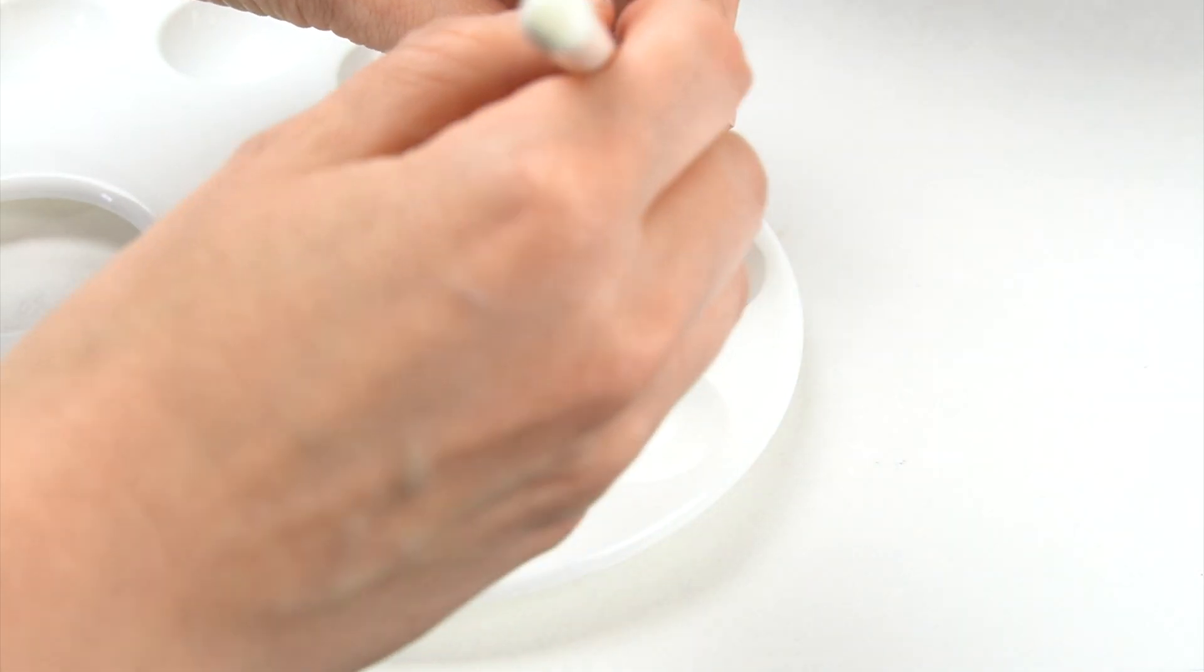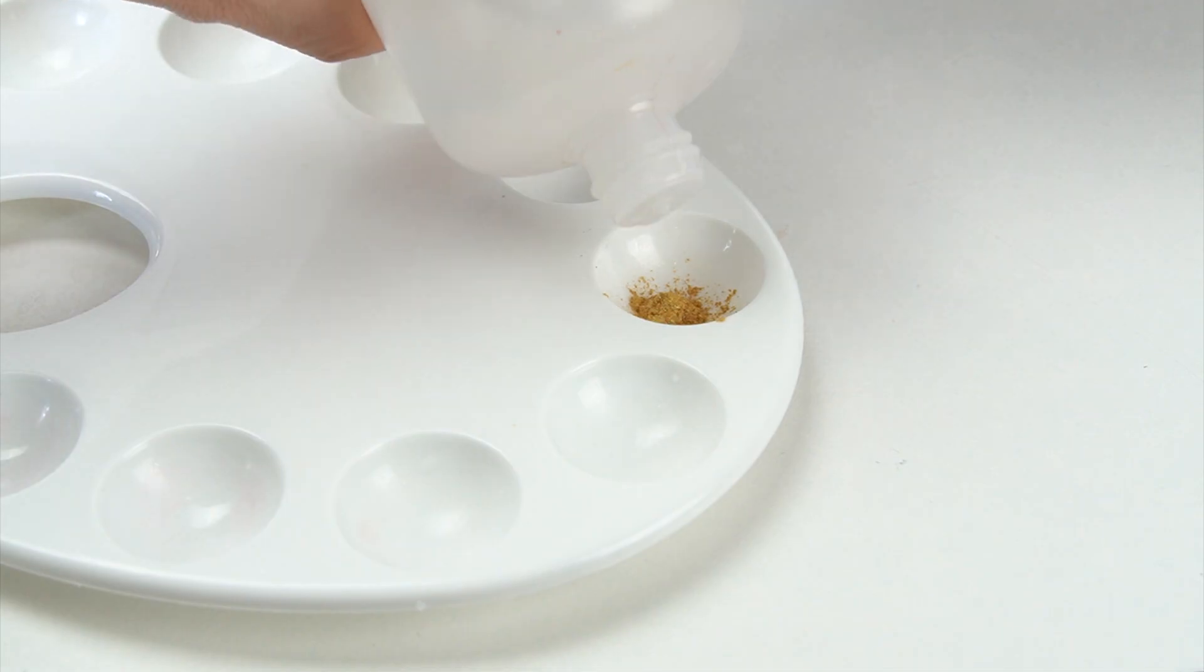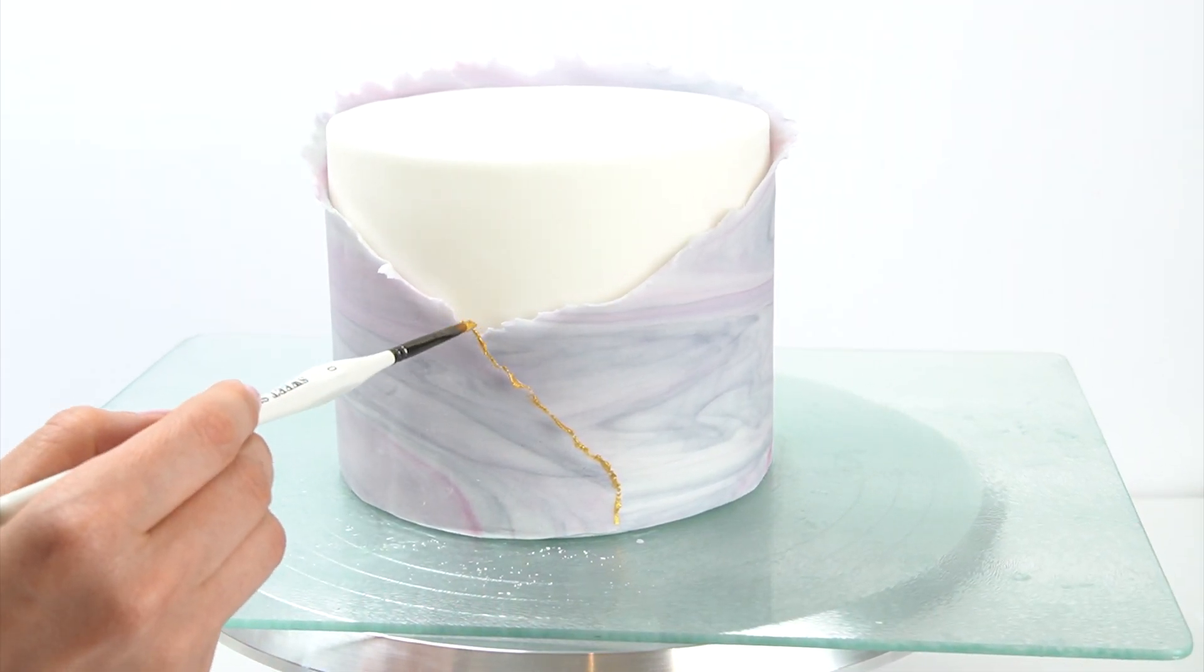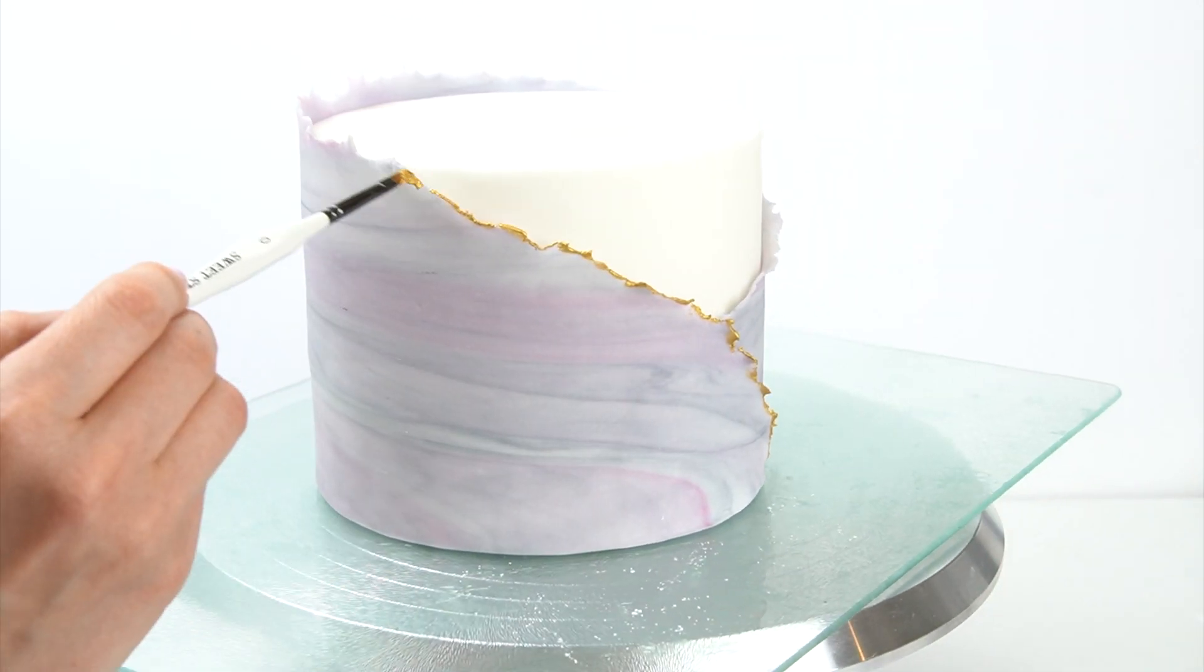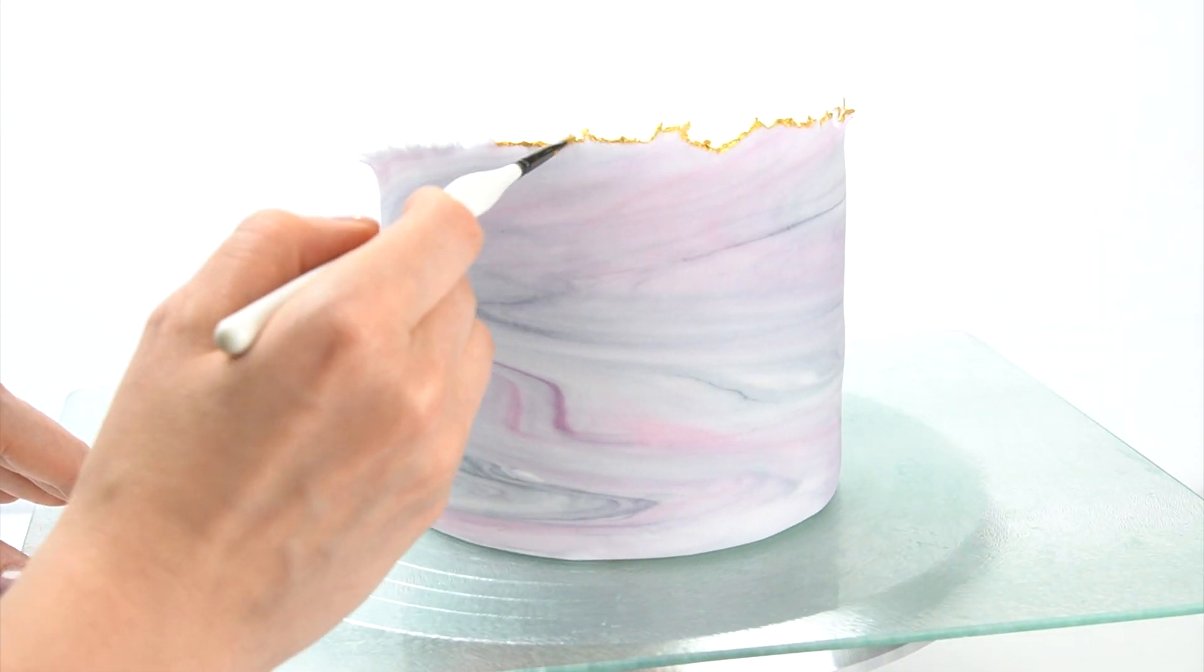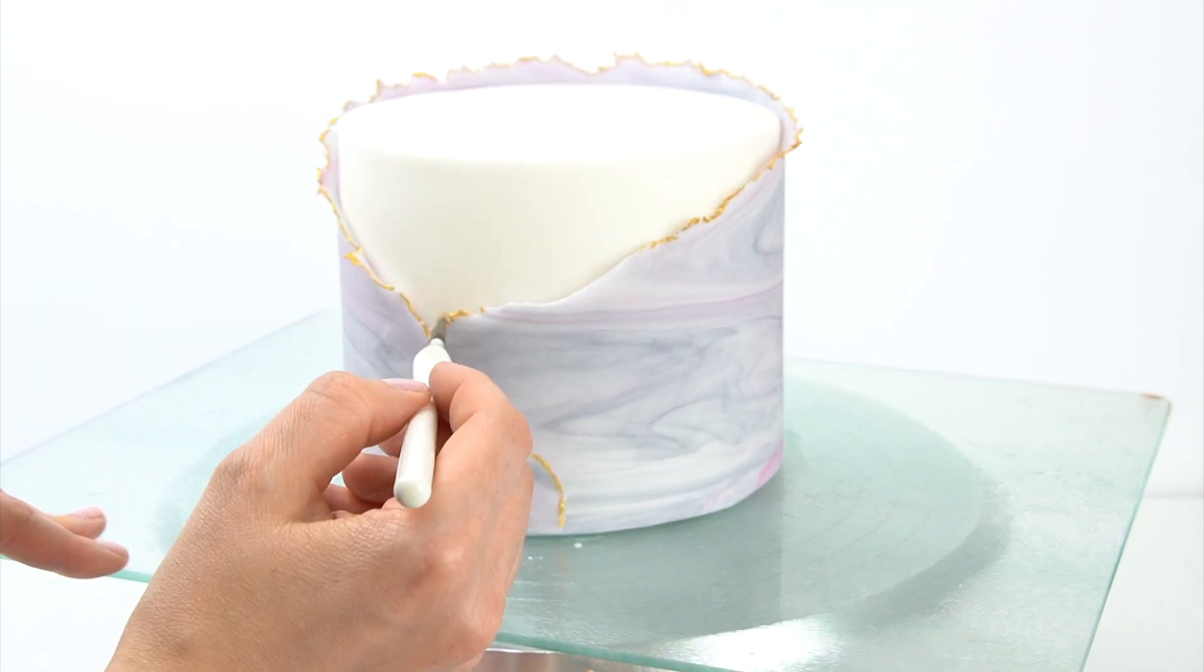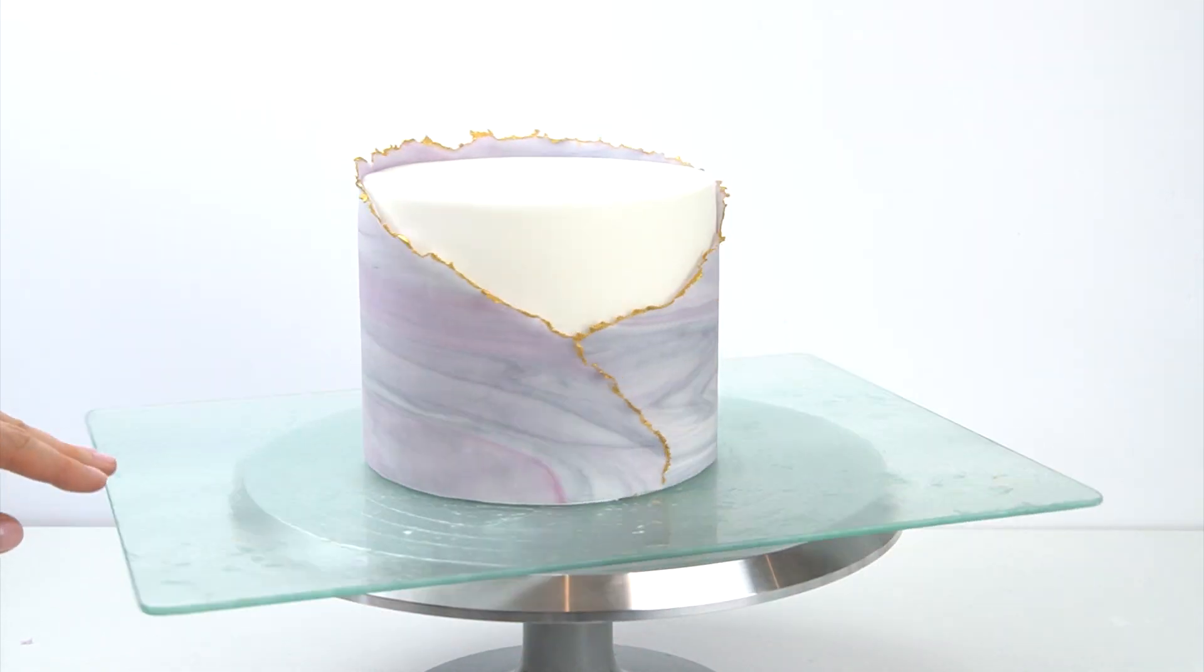To finish this off I'm taking some gold luster dust. This is the pure gold by Sweet Sticks. I'm going to mix this with a small amount of dipping solution to create an edible paint, and then take this on my brush and I'm just going to run it along that torn edge. If you're looking for alternatives to dipping solution to create edible paints, I do have a video where I go through my six favorite things to use and I will put a link to this in the description below. I'm just lightly running the brush along the edge, not pushing hard enough that it will change the shape.